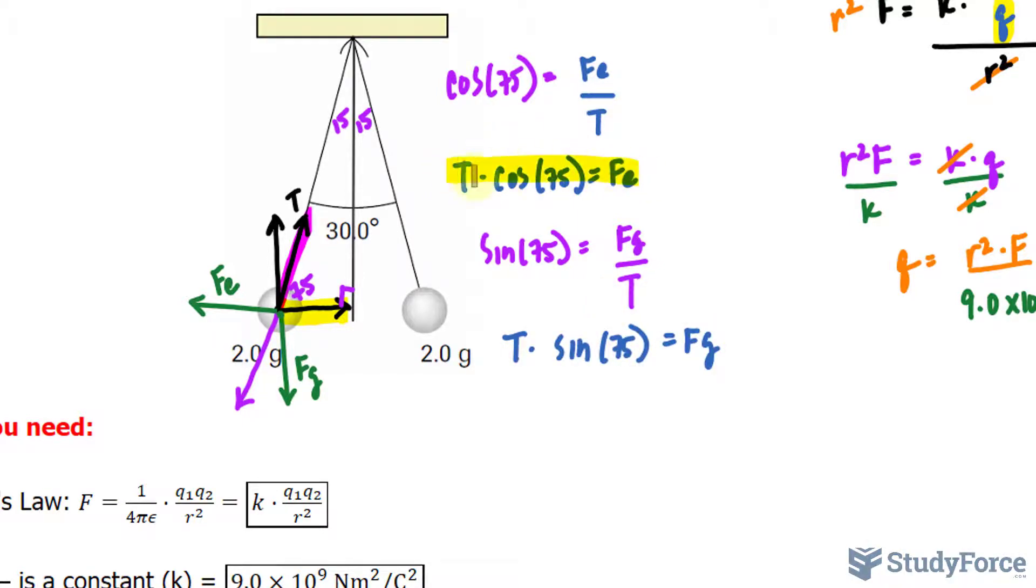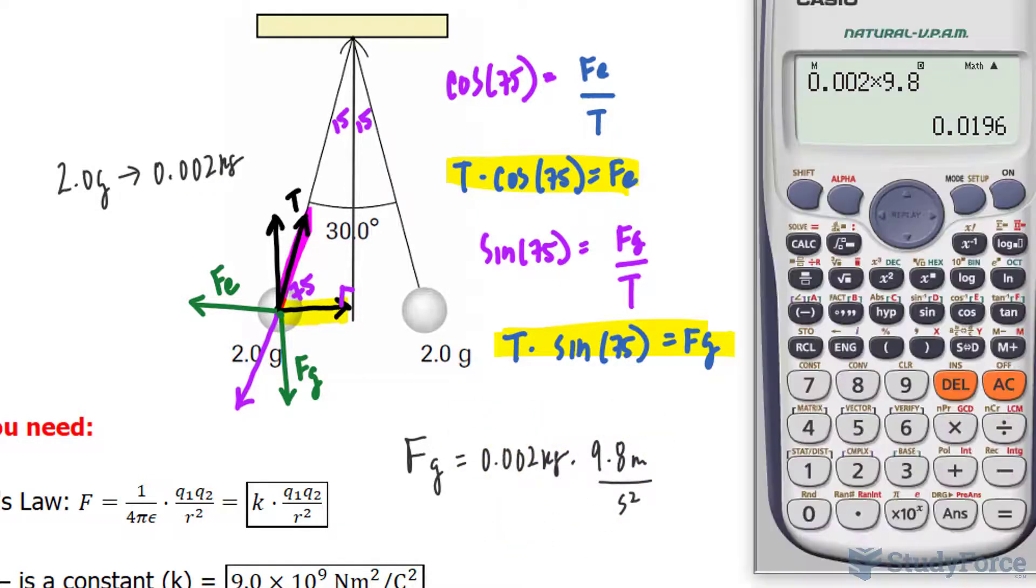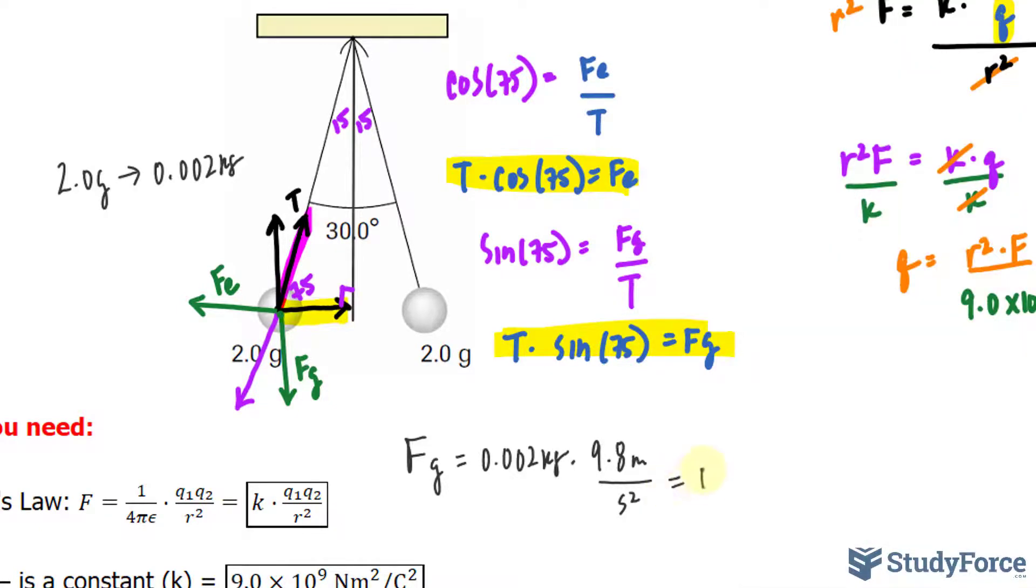The nice thing about these two equations is that Fg can be calculated by simply taking the mass times the acceleration due to gravity, which is a constant at 9.8 m/s². The mass, which is 2.0 grams, needs to be converted into kilograms because the unit of force, being newtons, is in kilograms. So we'll change 2.0 grams into 0.002 kilograms. Multiplying these out, we end up with 0.0196 newtons. We can take this number and replace Fg with what that is.